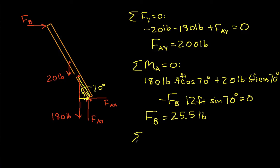Finally, let's look at the summation of forces in the x direction. We have the force F sub B in the x direction minus FAX, because FAX is pointing to the left, and this is equal to zero, which tells us then that FAX is equal to 25.5 pounds. So we've solved for the forces, we've achieved objective one.